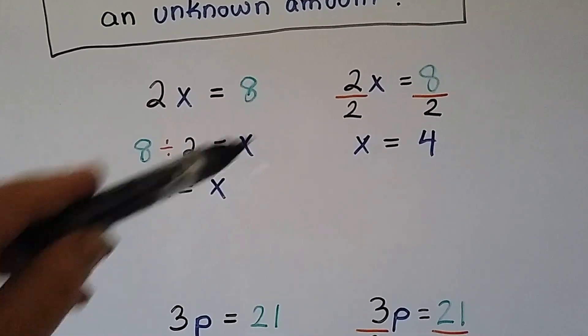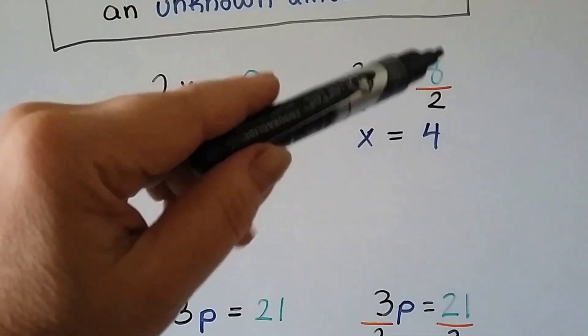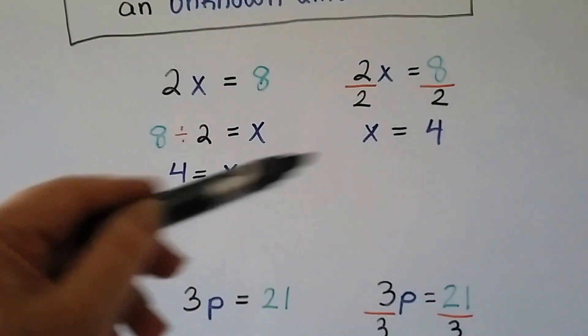We get 2 over 2, which is a 1. x equals 8 divided by 2 is 4, or 8 halves is 4.